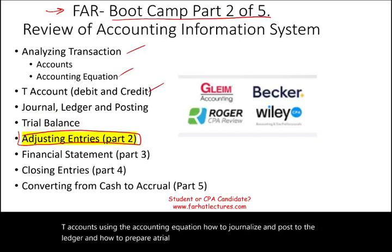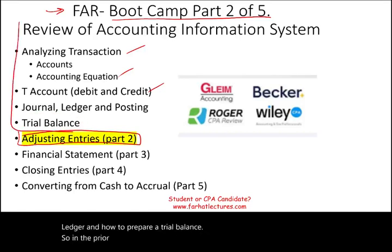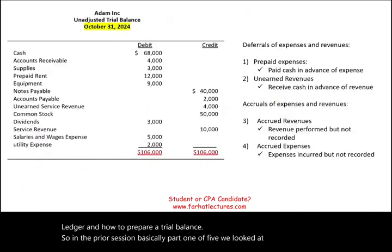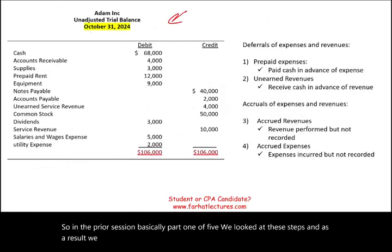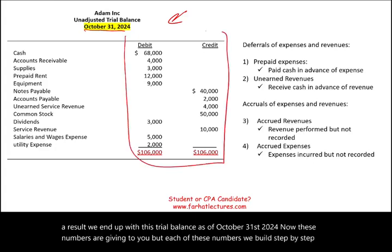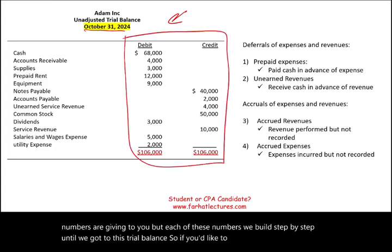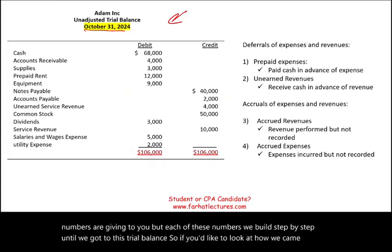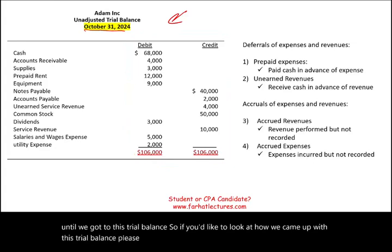In the prior session, basically part 1 of 5, we looked at these steps and as a result we ended up with this trial balance as of October 31st, 2024. These numbers are given to you, but each of these numbers we built step by step until we got to this trial balance. If you'd like to see how we came up with it, please look at the prior section.